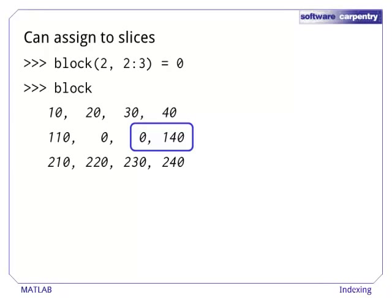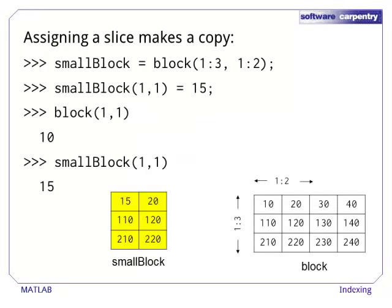It is also possible to assign to slices. For example, we can assign 0 to columns 2 and 3 in row 2 of block in a single statement. An array slice makes a copy of the underlying array, which means that the data values are copied to a new location and subsequent updates do not change the original matrix.